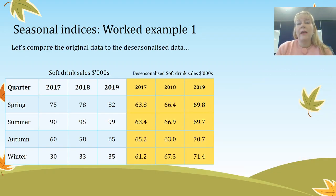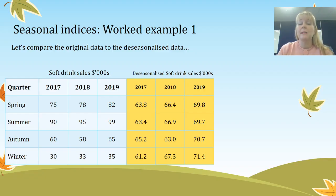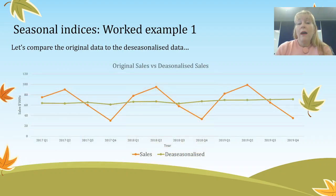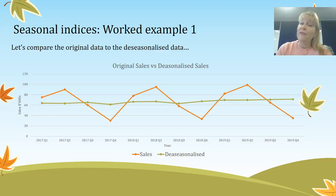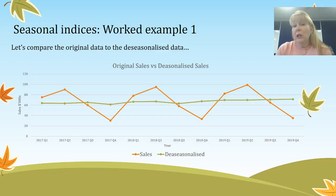Comparing the original data to the de-seasonalised data, you can see the original has lots of ups and downs, but now it's much more smooth. On the graph, the original data is shown by the orange spiky line and the de-seasonalised data is the flat green line. It was very difficult to see the trend before, but now we can see there's really not a lot of growth in this soft drink industry — it's just up and down according to the seasons.